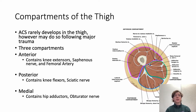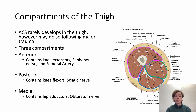ACS rarely develops in the thigh, however in major trauma it may do so. There are three major compartments: anterior, posterior, and medial. The anterior contains the knee extensors, saphenous nerve, and femoral artery. The posterior contains the knee flexors and sciatic nerve. The medial contains the hip adductors and obturator nerve.